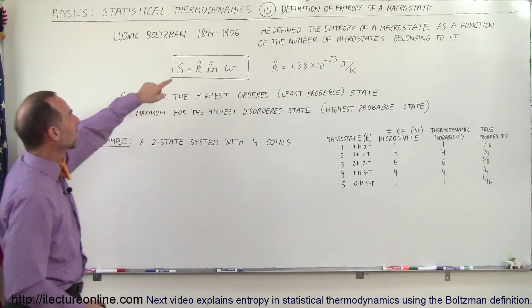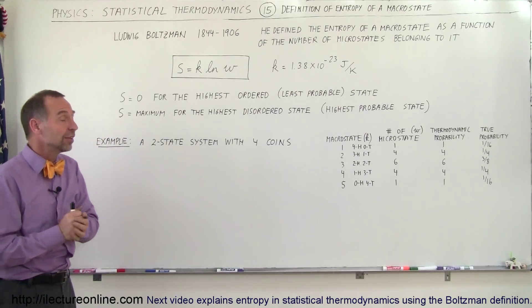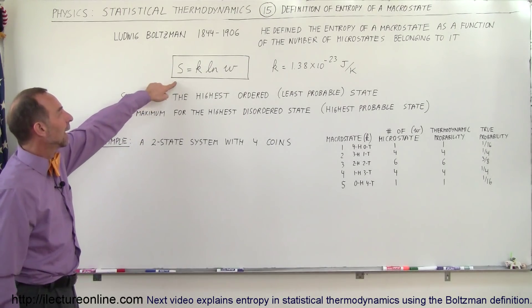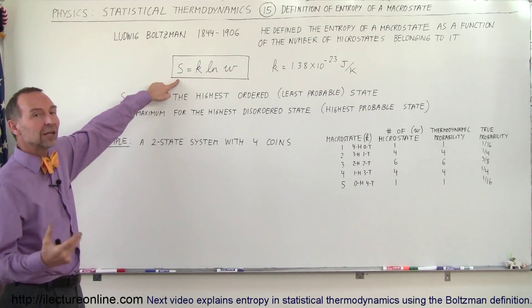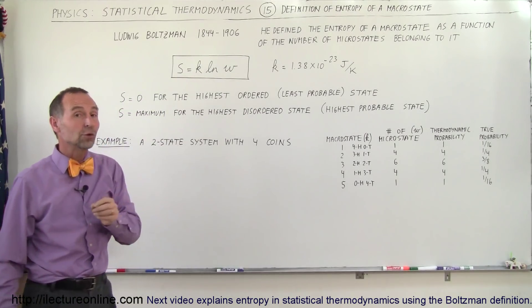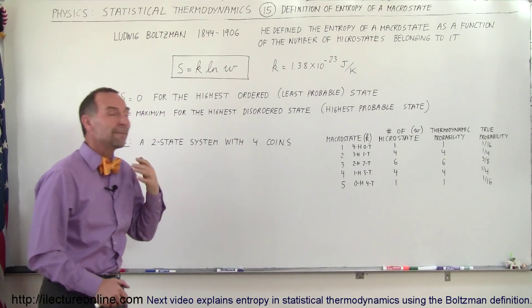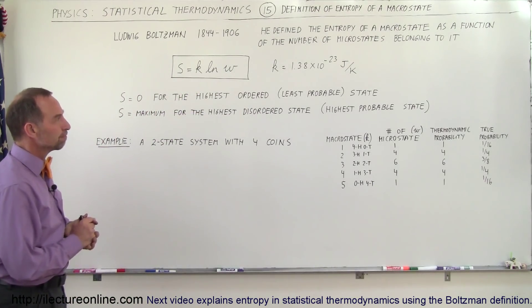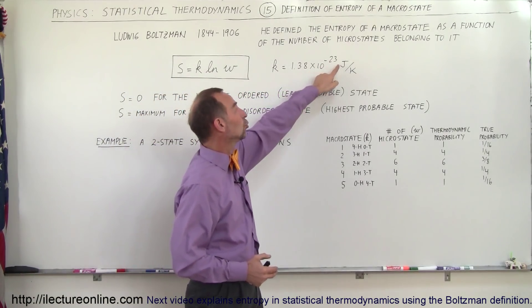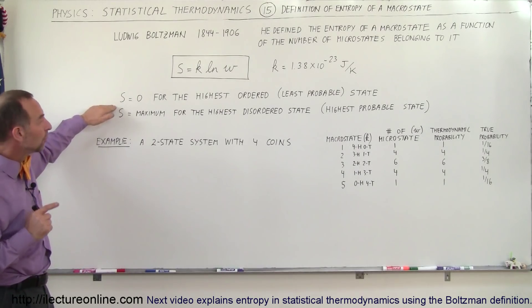Ludwig Boltzmann was born in 1844 and died in 1906, so he lived 62 years. He came up with this very simplistic calculation to define entropy. S is the letter that we use to define entropy and it's equal to some constant which is now known as the Boltzmann constant times the natural log of the number of microstates. K is 1.38 times 10 to the minus 23 joules per kelvin and S entropy will be equal to zero.